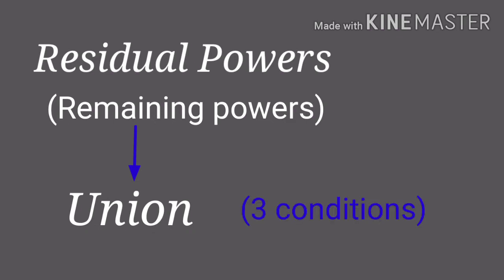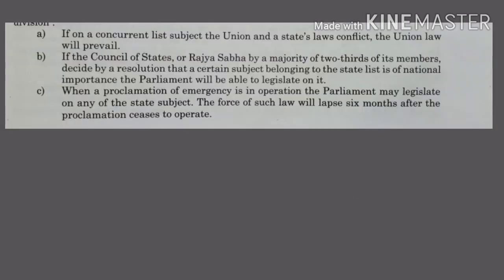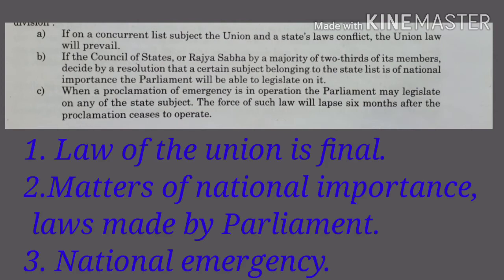There are three conditions attached to this division. First, the law of the Union is final. If there is a conflict upon a law between the State and the Union, it is the Union's law that will hold ground and will prevail.